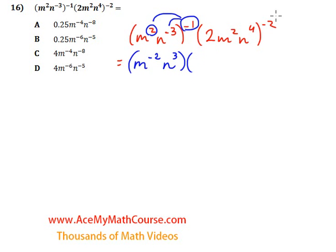And we're multiplying that by, now we also need to apply the negative 2 to all elements inside the parenthesis. So we get 2 to the power of negative 2. m squared to the negative 2 is just m to the negative 4, 2 times negative 2, negative 4. And n to the 4 to the negative 2 is n to the negative 8. Of course, because 4 times negative 2 is negative 8.